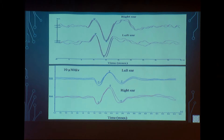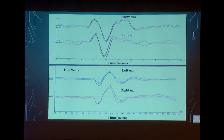The typical cVEMP waveform recorded from the sternocleidomastoid muscle has a first positive peak at around 13 ms and a second negative peak at around 23 ms. The oVEMP waveform recorded from the inferior oblique muscle has three peaks: a negative peak at ~10 ms, a positive peak at ~14 ms, and a third negative peak at ~20 ms.